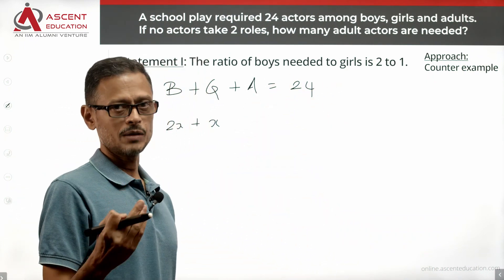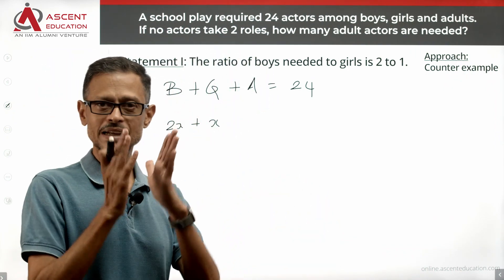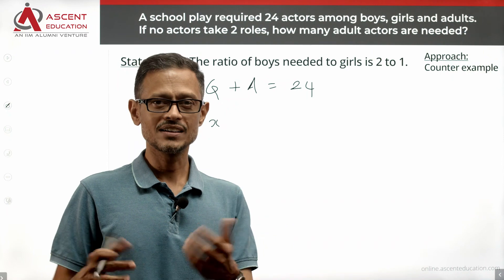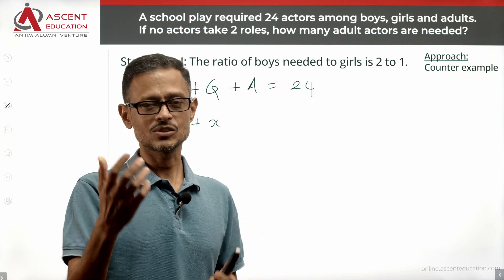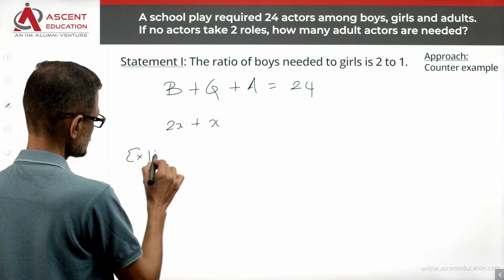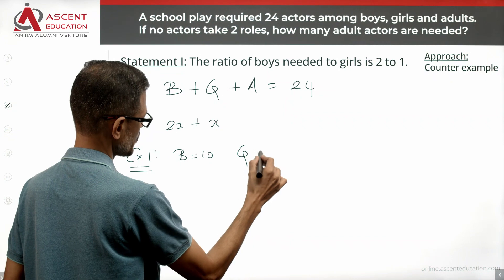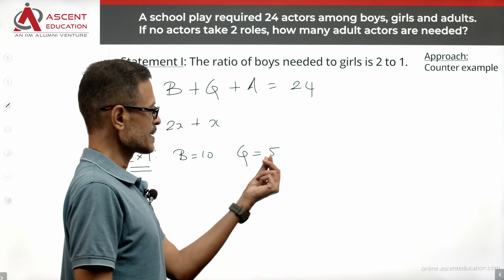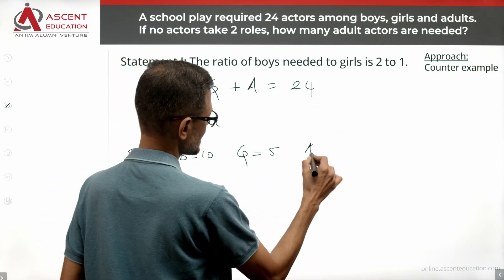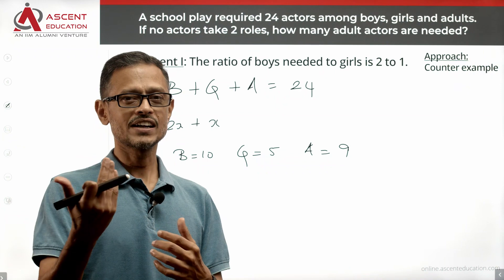I am taking an approach called counter-example: in the 2 to 1 ratio, if I am able to find 2 different values for the number of adult actors, then we are not able to find a unique value, which means the given data is not sufficient. Example 1: I take the number of boys to be 10. With a 2 to 1 ratio, the number of girls is 5. Boys and girls together is 15. With 24 total actors, the number of adults is 9.